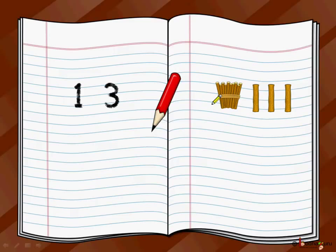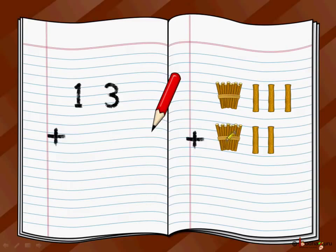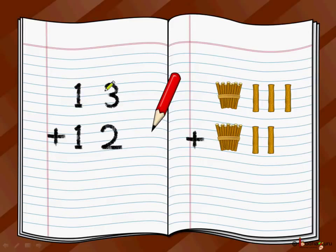So how do we write 13? We write 1 and 3 — 13. And we got 10, 11, 12 more sticks, which is one bundle of 10 and 2 loose sticks. So we had 13 sticks and we got 12 more sticks.